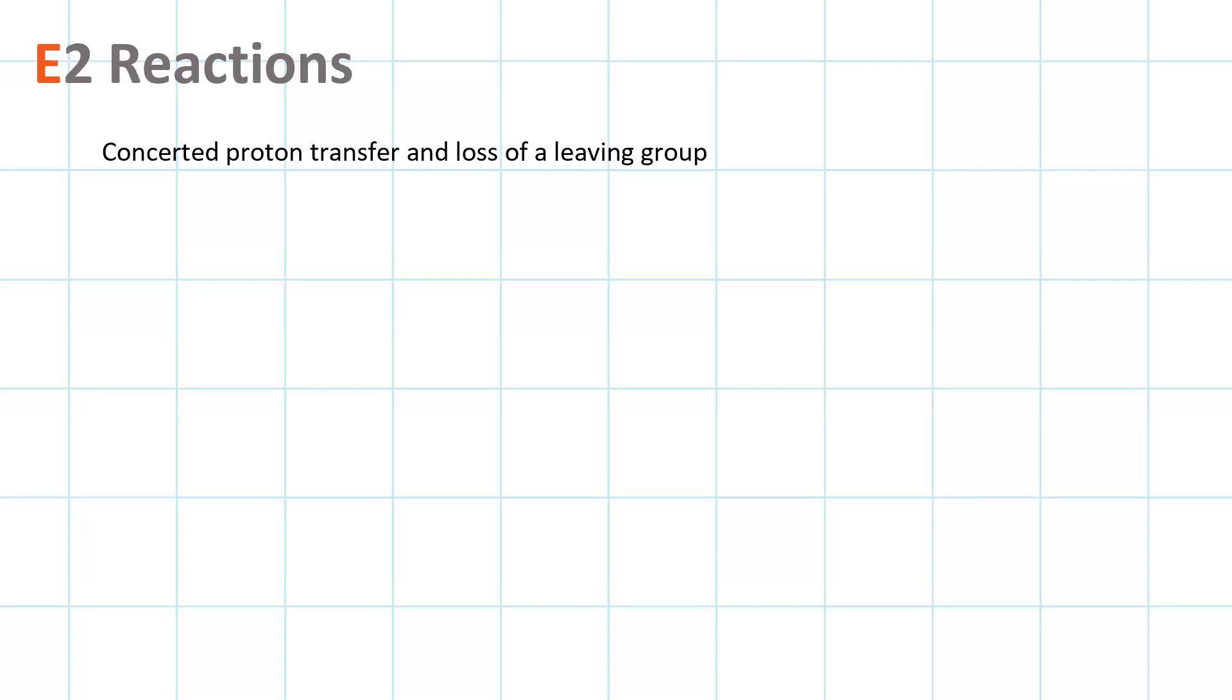E2 reactions involve concerted proton transfer and loss of a leaving group. Alkyl halides make great substrates for E2, and the reagent should be a strong base.